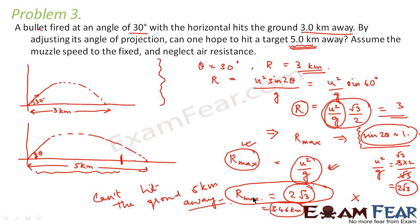So what is the concept that we used here? We just used the funda of maximum range that the projectile can travel. So the maximum range, for maximum range sine 2 theta has to be 1. So maximum range would be u squared by g. Now, given the data of 3 kilometers, we found out the value of u squared by g, which we found as 2 root 3. So since maximum range, which we calculated, is less than 5 kilometers, therefore it cannot hit the target 5 kilometers away.